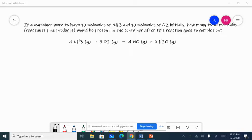The other thing it could mean is either molecules, atoms, formula units, so on and so forth. So we can still use a BCA chart. We talked before how BCA charts have to be moles, but they could also be molecules, atoms, formula units, or ions. So let's do a BCA chart for this problem. If a container were to have 10 molecules of NH3 and 10 molecules of O2 initially, how many total molecules of reactants plus products would be present in the container after this reaction goes to completion?